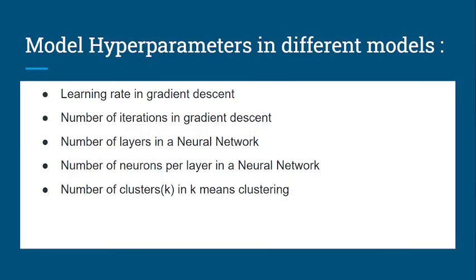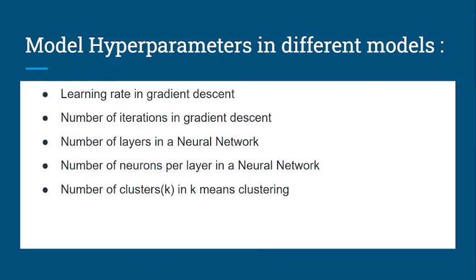Here the number of epochs is a hyperparameter and is set manually. Setting this number to a small value may cause underfitting and a high value may cause overfitting. Other hyperparameter examples include: the learning rate in gradient descent, the number of iterations in gradient descent, the number of layers in a neural network, the number of neurons per layer, and the number of clusters k in k-means clustering.